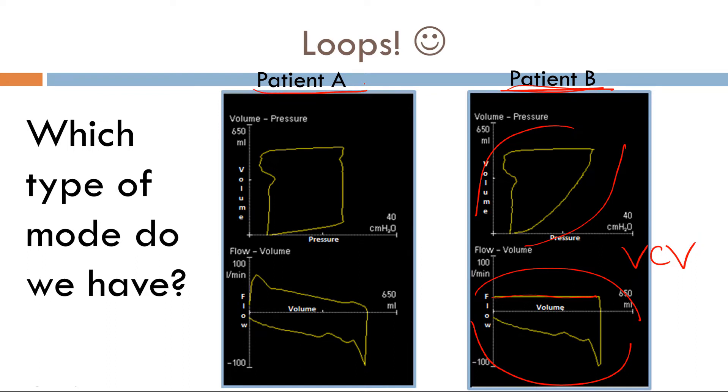Let's go to patient A here. We have inspiration, expiration, inspiration, expiration. During the inspiratory phase, we should have a target variable that's constant.